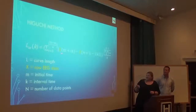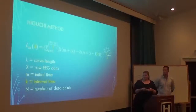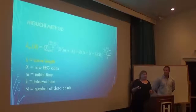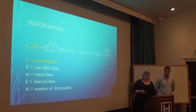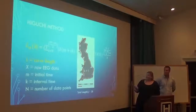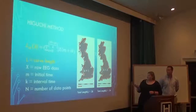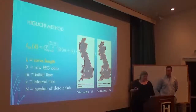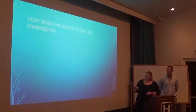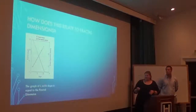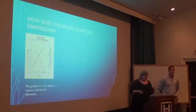K is the ruler size, which corresponds to interval time, and N is our number of data points. Tying this back to the coastline paradox: as you decrease K, you get different Ls. We ran our EEG data through the Higuchi method — and this example is from a reference paper — and you can create a graph of L versus the log of K. The slope of that graph is actually your fractal dimension.